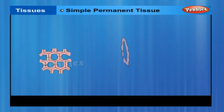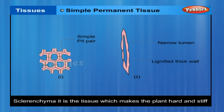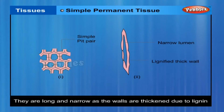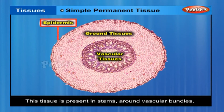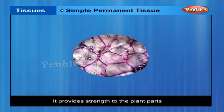Another type of permanent tissue is sclerenchyma. It is the tissue which makes the plant hard and stiff. The husk of a coconut is made of sclerenchymatous tissue. The cells of this tissue are dead. They are long and narrow as the walls are thickened due to lignin, a chemical substance which acts as cement and hardens them. This tissue is present in stems, around vascular bundles, in the veins of leaves and in the hard coverings of seeds and nuts. It provides strength to the plant parts.